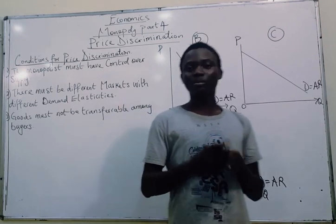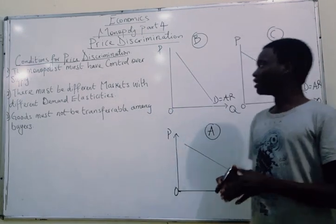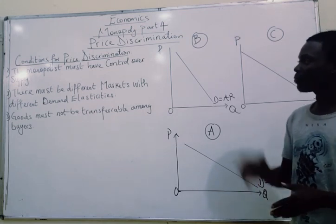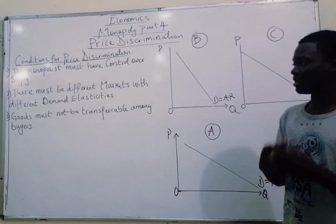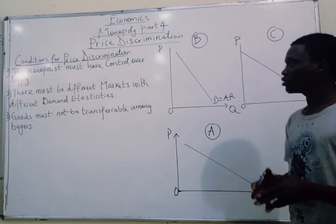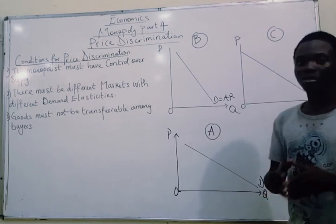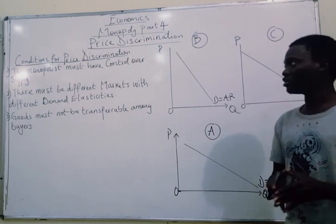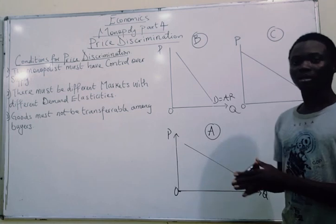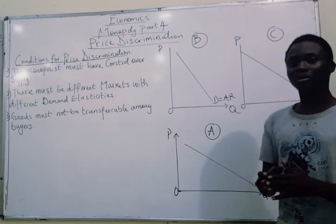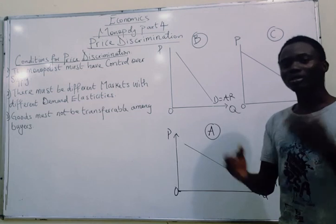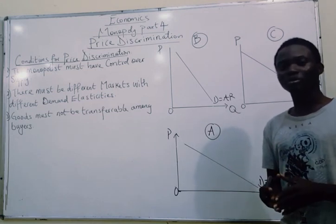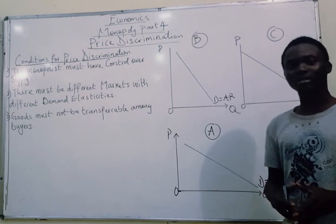These are the three basic conditions that must be in place to price discriminate: first, the monopolist must have control over supply; second, there must be different markets with different demand elasticities; and third, goods must not be transferable among buyers. In the next video, we shall be solving a mathematical question comparing profits when the monopolist is discriminating versus not discriminating. Thank you very much for watching, and see you next time.